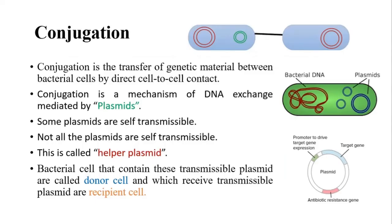Conjugation is a process in which one bacteria transfers its genetic material to another bacteria through a direct cell-to-cell contact. A direct cell-to-cell contact is necessary for the transfer of genetic material between the bacterial cells.